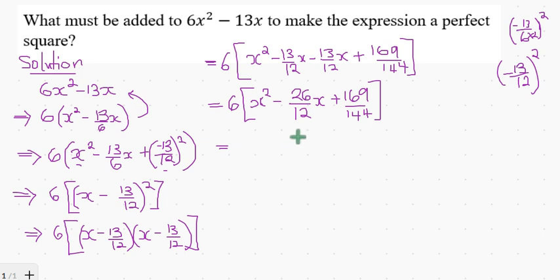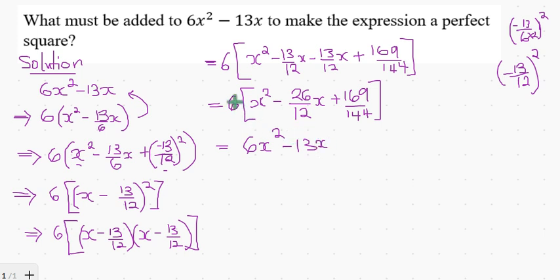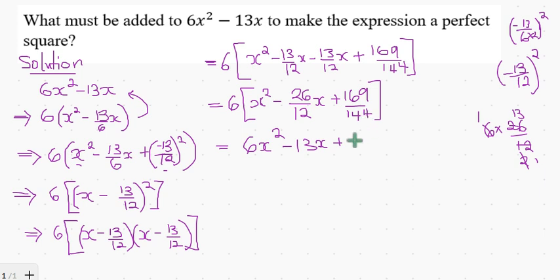Next, I distribute the 6 outside over the three terms in the bracket. 6 times x squared equals 6x squared. For 6 times 26 over 12: 6 divides into 12 twice, and 2 divides into 26 thirteen times, giving minus 13x. For 6 times 169 over 144: 6 divides into 144 twenty-four times, giving 169 over 24.